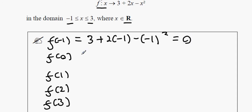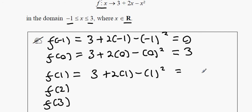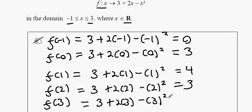The next one is 3 plus 2 times 0 minus 0 squared — put that into your calculator and you get 3. The next one is 3 plus 2 times 1 minus 1 squared, and that gets you 4. Then 3 plus 2 times 2 minus 2 squared, which also gets us 3. Finally 3 plus 2 times 3 minus 3 squared, which gets me 0.